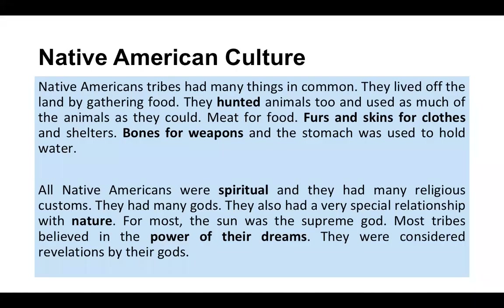Native American tribes had many things in common. They lived off the land by gathering food. They hunted animals too and used as much of the animals as they could — meat for food, furs and skins for clothes and shelters, bones for weapons, and the stomach was used to hold water. All Native Americans were spiritual and they had many religious customs. They had many gods and they also had a very special relationship with nature.